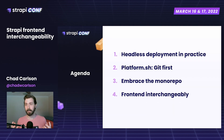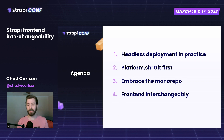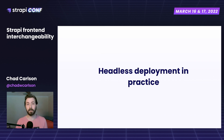Thanks for the introduction. Howdy everyone. Very excited to be back for another StrapiConf. My name is Chad Carlson. I'm from the Developer Relations team at Platform.sh. Today I'm going to talk about front-end interchangeability — basically, what it means to place a variety of different front-ends in front of Strapi, what problems that solves in the traditional way of deploying, and then a brief introduction to Platform.sh and how the monorepo model changes the problem and gives us flexibility for changing out those front-ends.